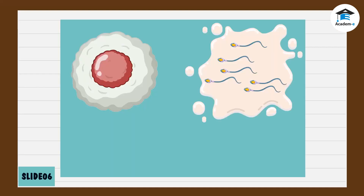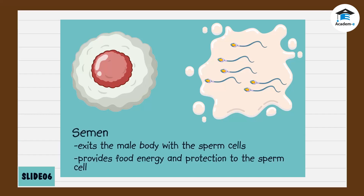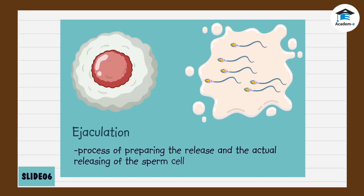When sperm cells are ready for release, they exit the male reproductive system along with a fluid called semen. The semen provides food, energy, and protection to the sperm cell as it travels toward the egg cell. The process of preparing the release and the actual releasing of the sperm cell from the male body is called ejaculation.